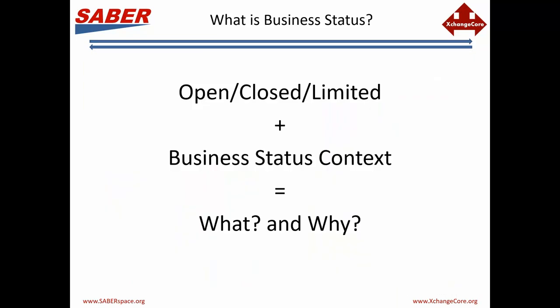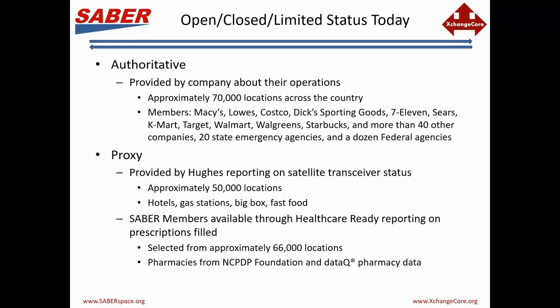So what kind of data? Two different levels. Used to be open, closed, and limited status, plus maybe a little more information. But now over the last year or so we've researched, worked with companies, established a standardized way of dealing with the information, even published that as a national information exchange model format for what is the context of that business status. Open, closed, limited answers the question 'what,' and then the business status context answers the question 'why.'